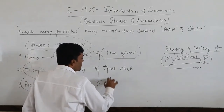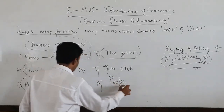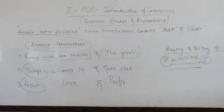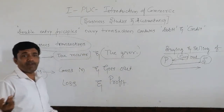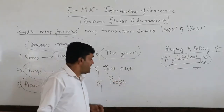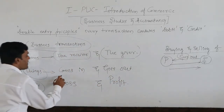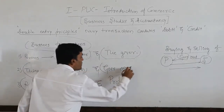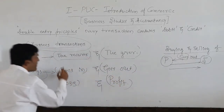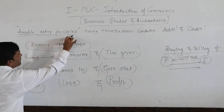The last aspect is result. The result of the business is whether it is a loss or a profit — just as the result for students is pass or fail. So we can see two aspects in every transaction, and we need to concentrate on double entry principles.